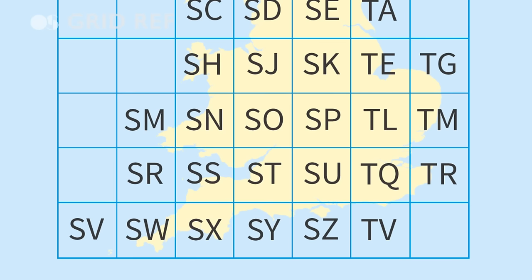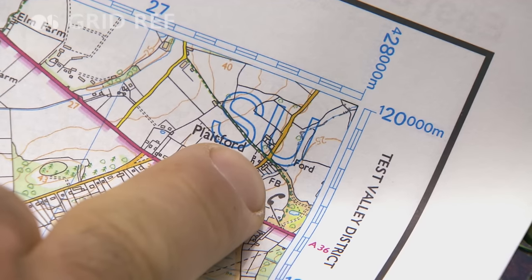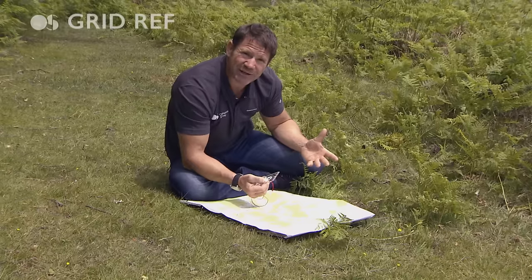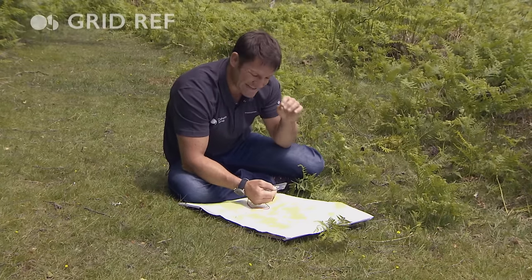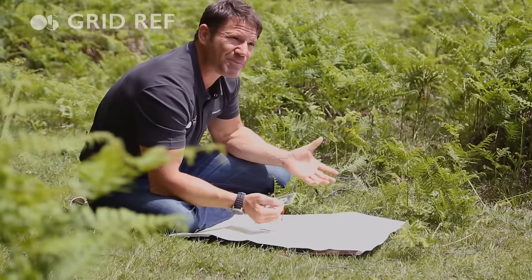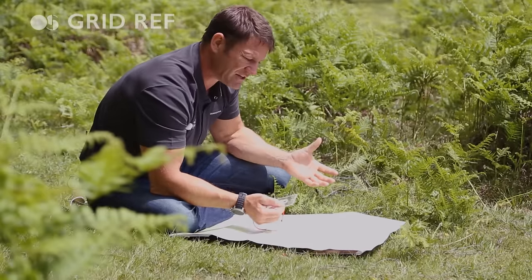Now add the prefix which relates to a unique part of Great Britain — in this case SU. So I'm at SU 265, 166. If a friend is out looking for you and you can give that exact 100-metre square, then you've got a much better chance of finding each other.